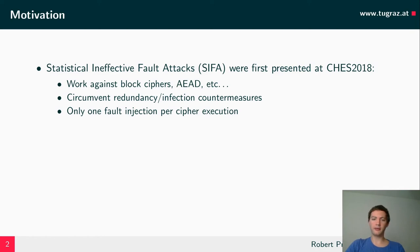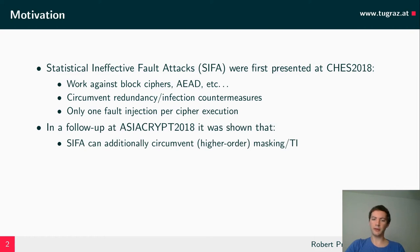SIFA has a couple of nice properties from an attacker's perspective. It works pretty much out of the box against all kinds of cryptographic schemes, including block ciphers and AEAD schemes. It can also circumvent typical countermeasures against fault attacks, such as redundant computation and infection. And on top of that, you only need one fault injection per cipher execution. Furthermore, it was shown at AsiaCrypt in the same year that SIFA can additionally circumvent masking, even higher-order masking or TI schemes, making it a quite compelling choice for attacking combined countermeasures.